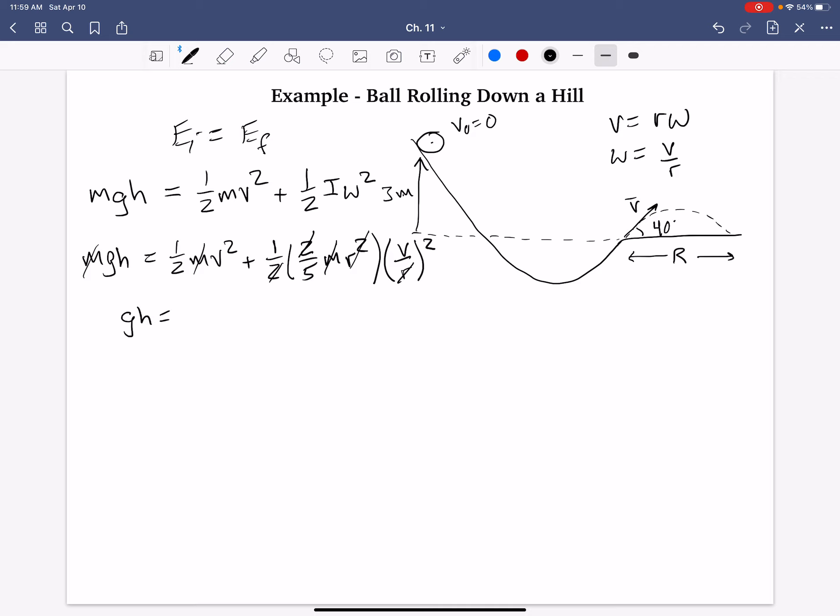So, we have gh equals one-half v squared plus one-fifth v squared. That's what we have now. And, this turns out to be one-half plus one-fifth. Common denominator is ten. What's that? Five-tenths plus two-tenths is seven-tenths v squared.